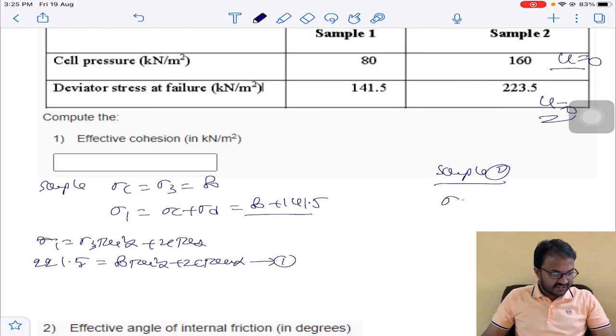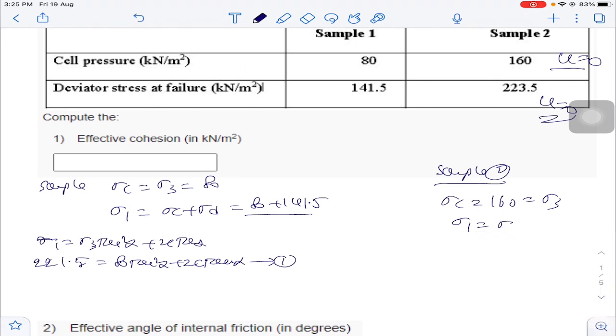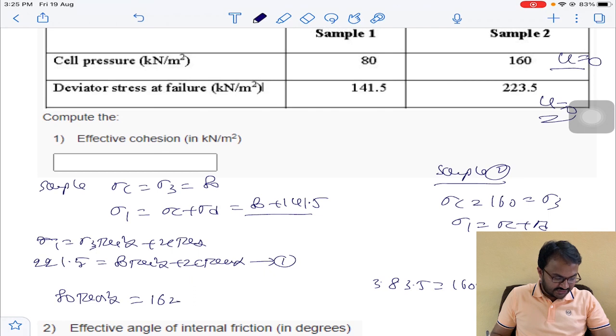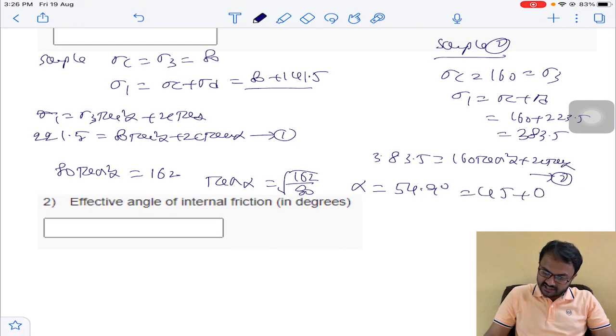Coming to sample number 2, sigma C is equal to 160 that is sigma 3, and sigma 1 is equal to sigma C plus sigma T, that is equal to 160 plus 223.5, that will be 383.5. Using the same equation, 383.5 is equal to 160 tan square alpha plus 2C tan alpha. If you deduct 2 from 1, you will get 80 tan square alpha is equal to 162. Tan alpha is equal to 162 divided by 80. You will get alpha is equal to 54.9 degrees.